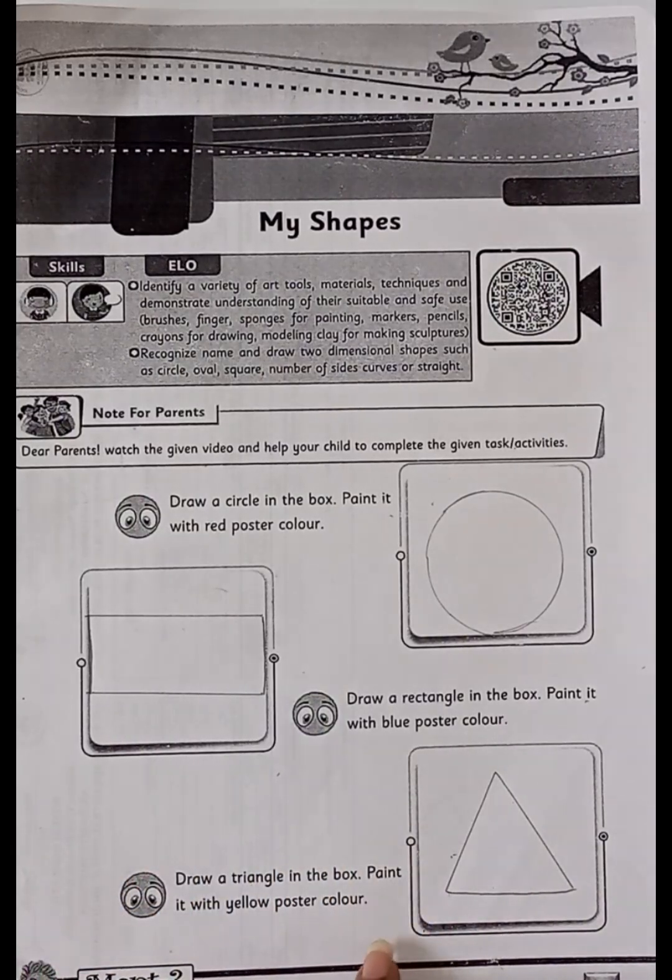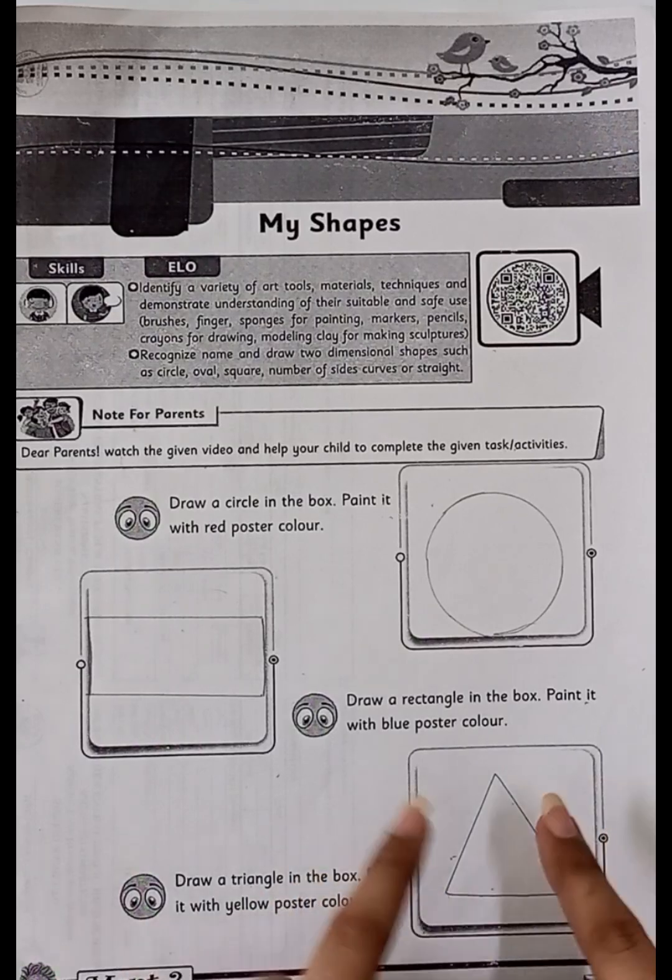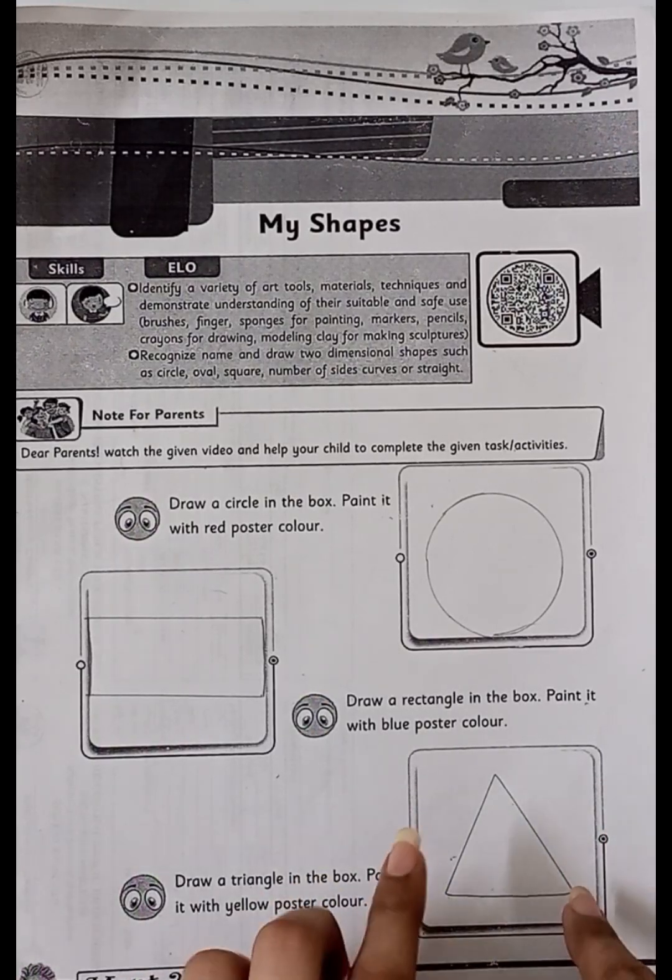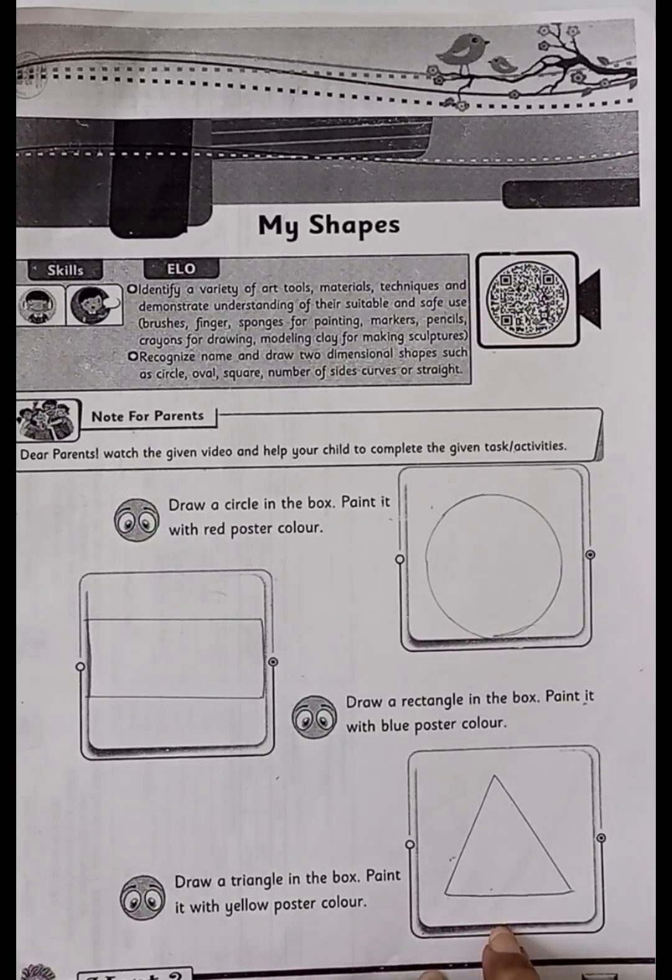Let's go to the third shape, which is the triangle. It has three sides and corners. It has three sides and three corners.